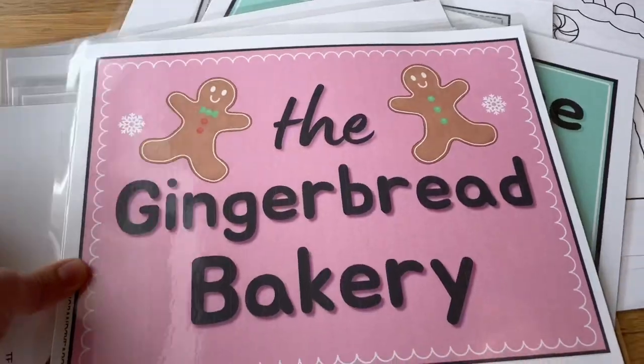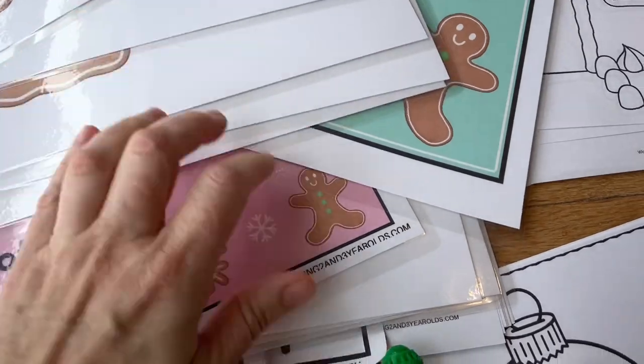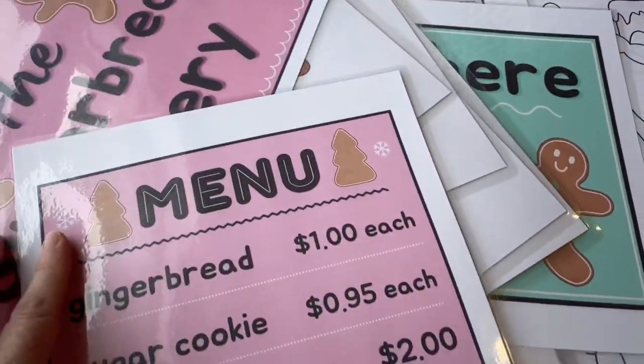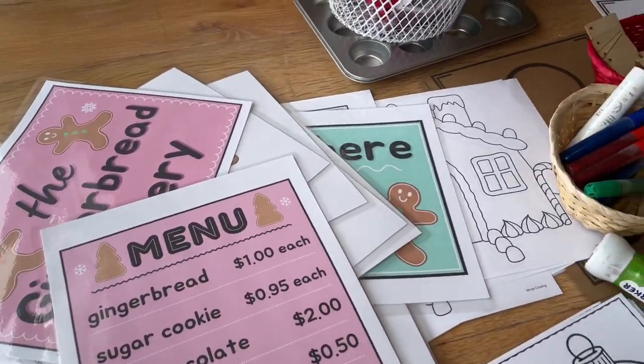Next, of course, in our dramatic play, we're going to be setting up the gingerbread bakery. I'll just simply put out my Melissa and Doug cookie set with the signs on the wall. They play with those cookies nonstop. They'll have fun with those all month long.